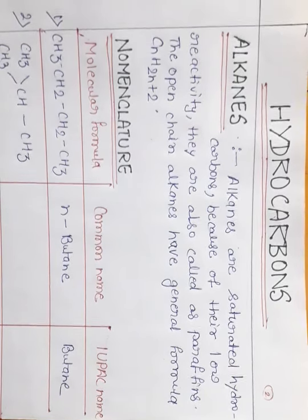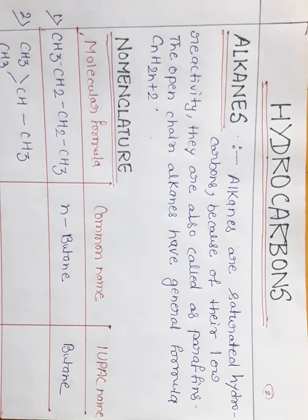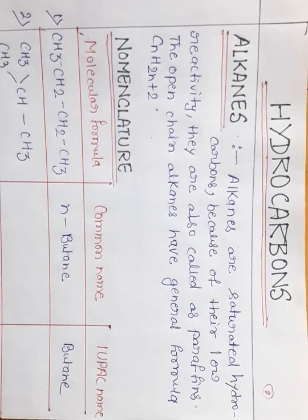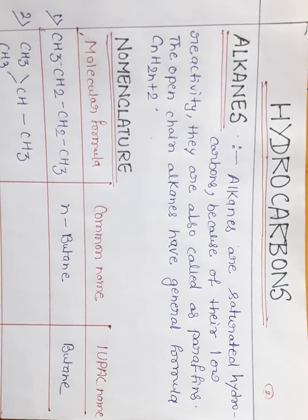Hello students. In the last class we started our new chapter, hydrocarbons. We studied what a hydrocarbon is — compounds made up of only carbon and hydrogen elements are called hydrocarbons. Hydrocarbon is classified into two parts: open-chain hydrocarbon and closed-chain hydrocarbon.